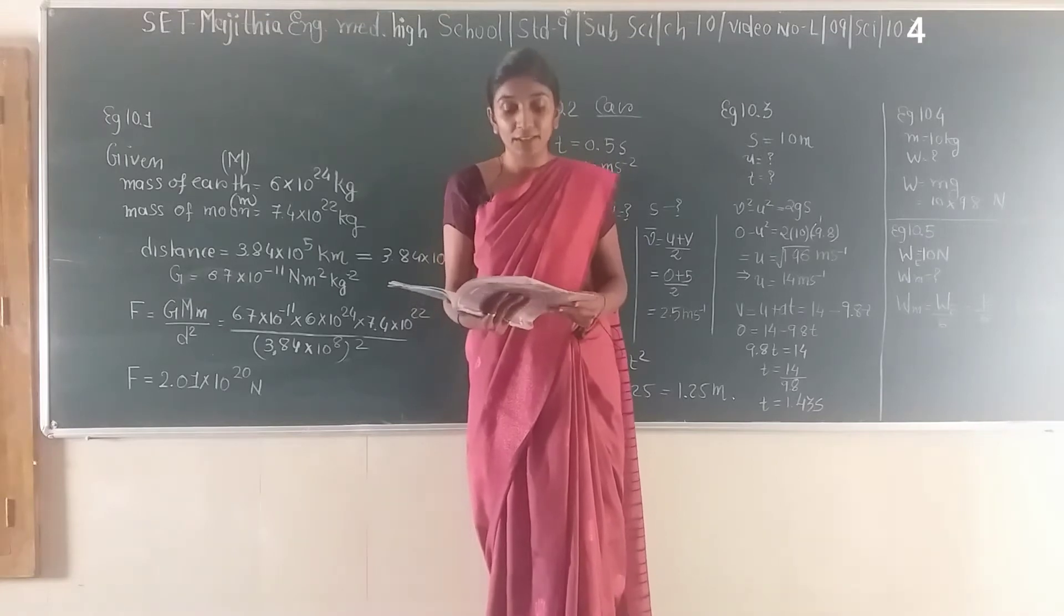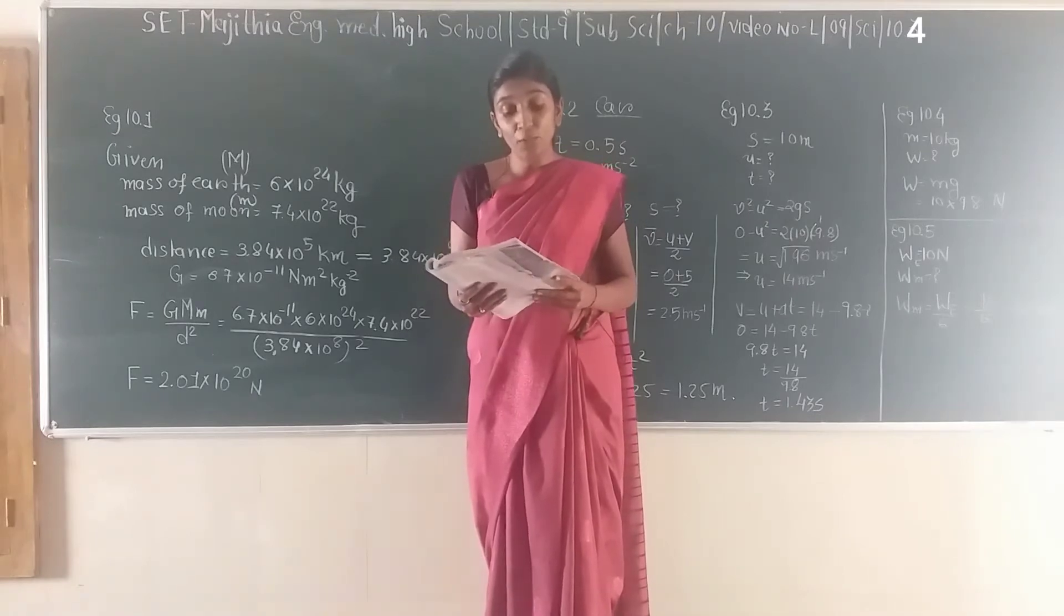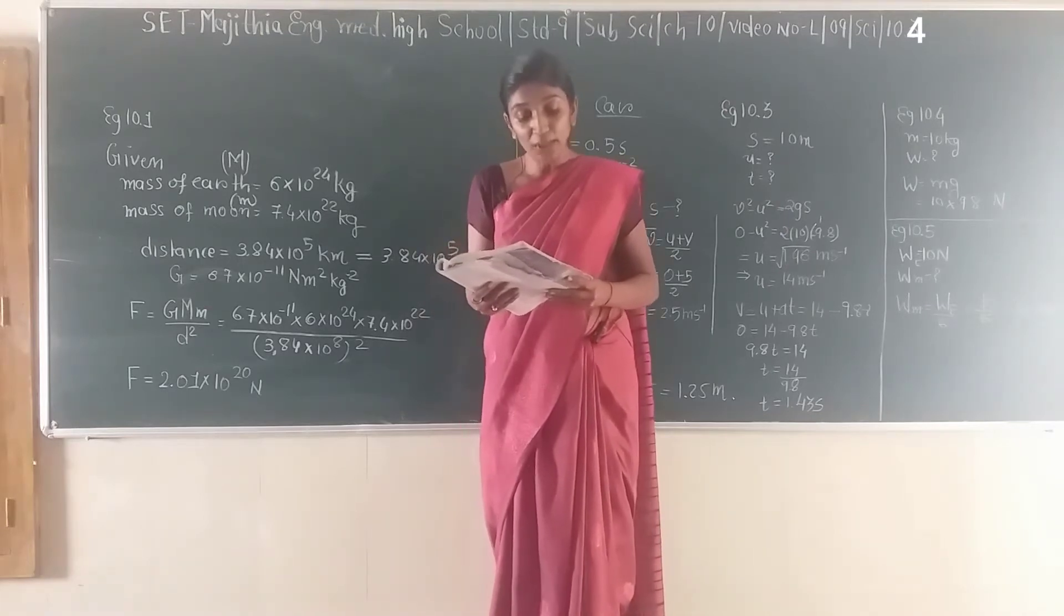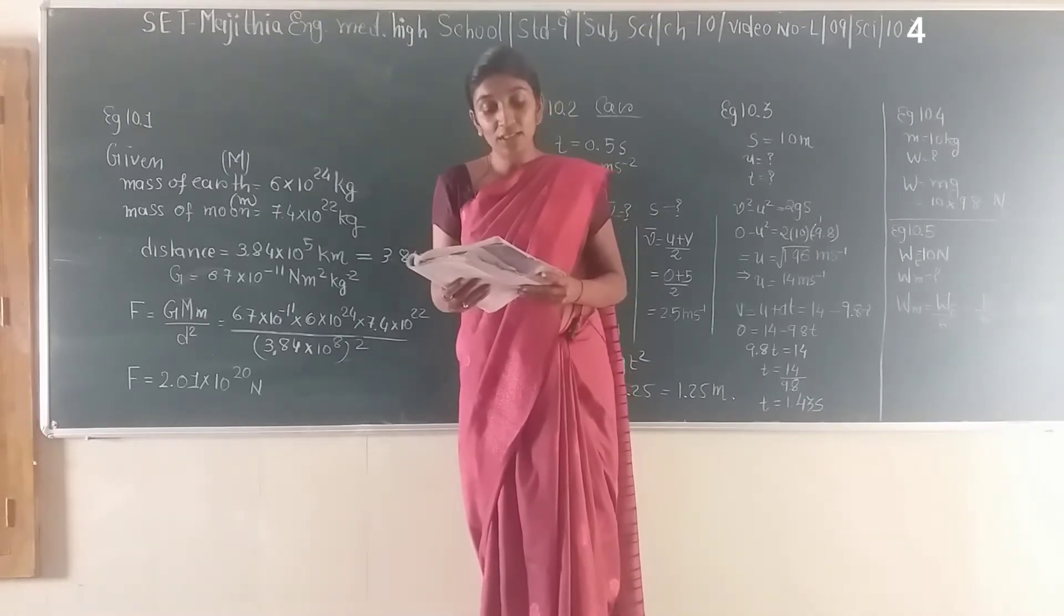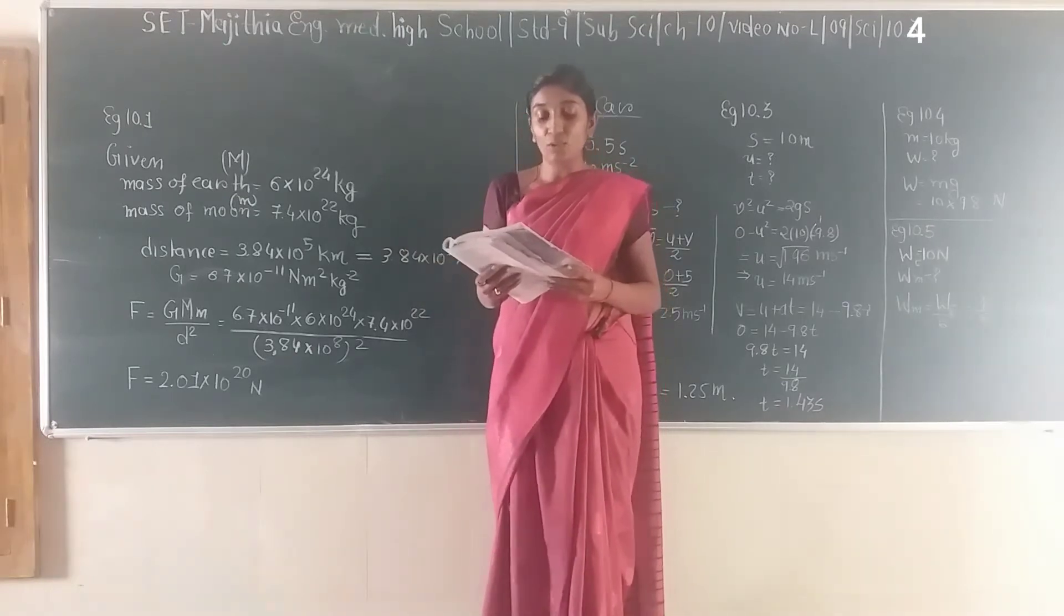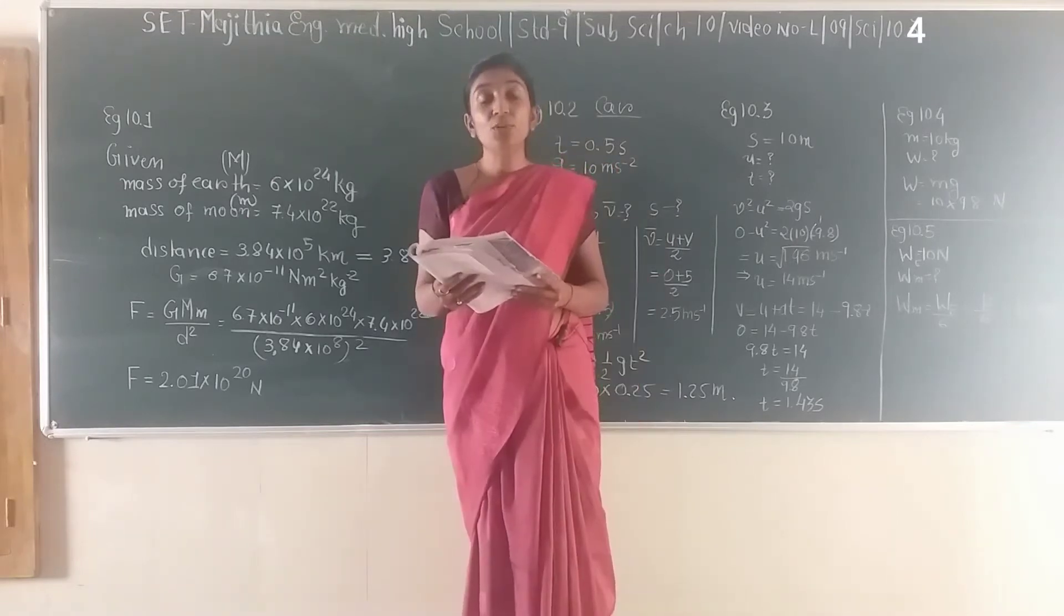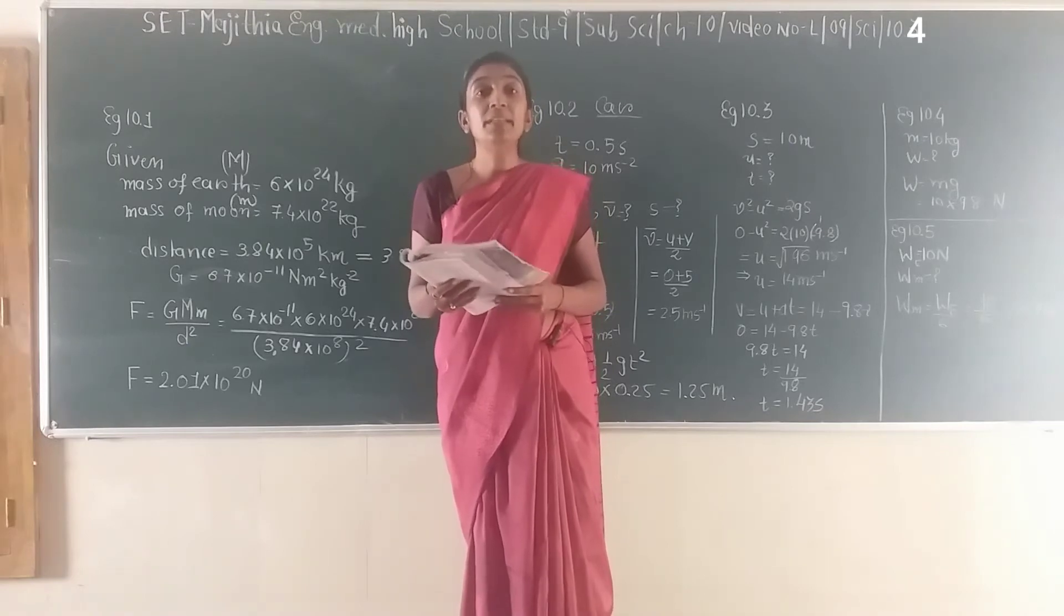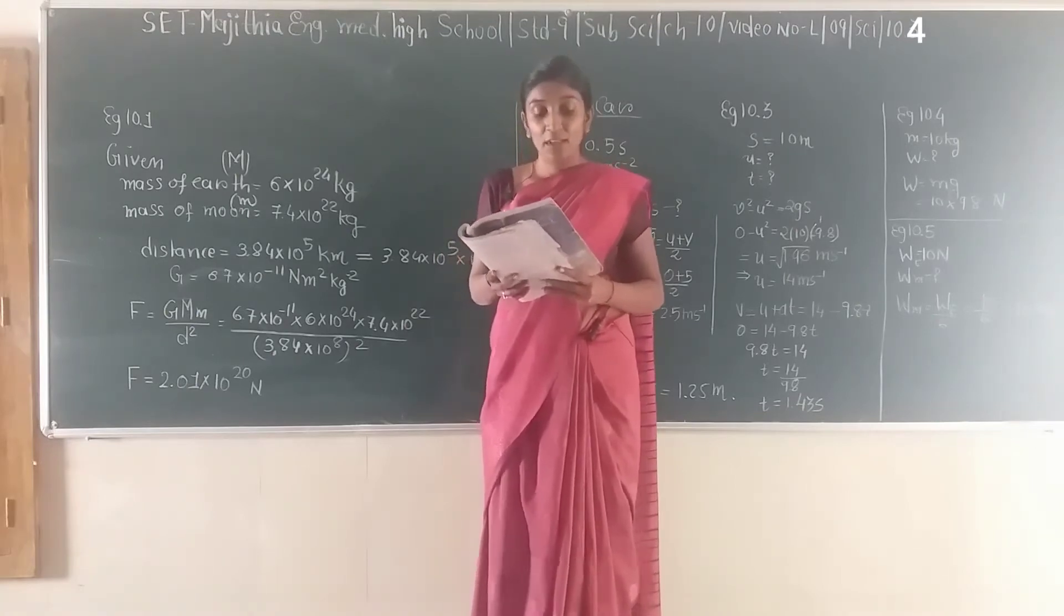Example number 10.1 is on page number 134. Mass of Earth is 6 × 10²⁴ kg, mass of Moon is 7.4 × 10²² kg. If the distance between Earth and Moon is 3.84 × 10⁵ kilometers, calculate the force exerted by the Earth on Moon. Given G = 6.7 × 10⁻¹¹ Newton meter square per kilogram square.